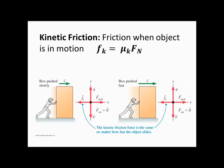We also have kinetic friction, which we can write as kinetic friction equals the coefficient of kinetic friction times the normal force. The coefficient of kinetic friction is not the same as the coefficient of static friction — they act differently. Kinetic friction happens when an object is moving. What's different is kinetic friction will be the same no matter how fast you're pushing the object — whether slowly or quickly, you're going to have the same kinetic friction pushing back on it.